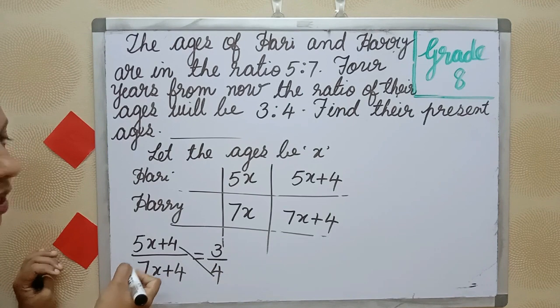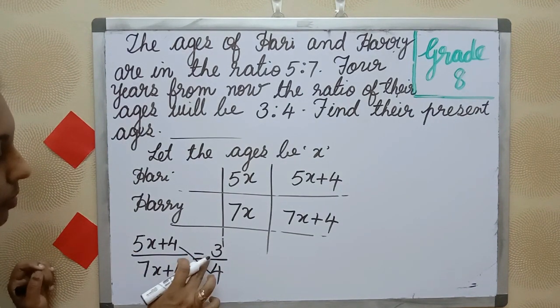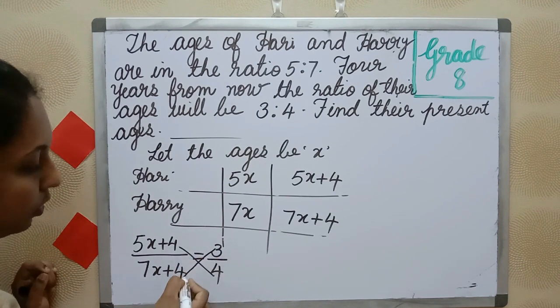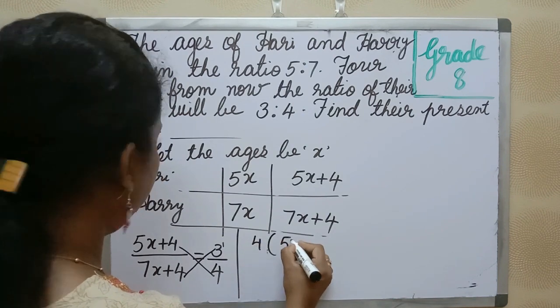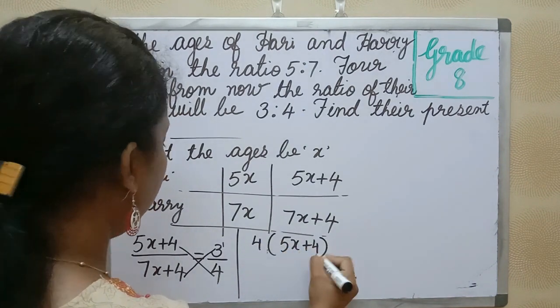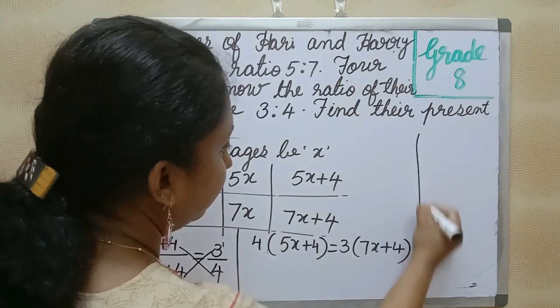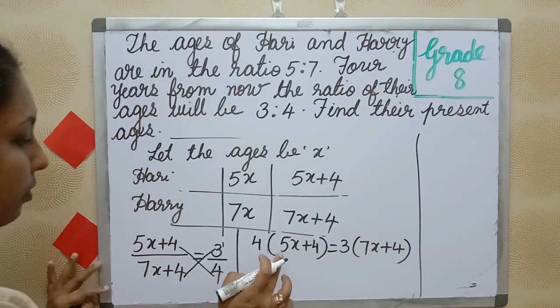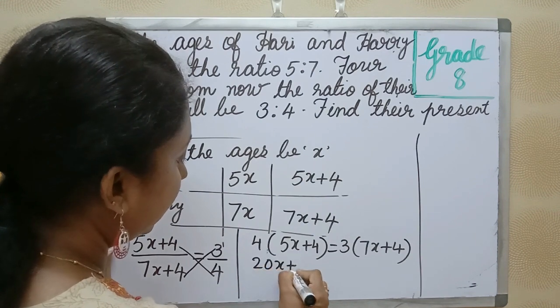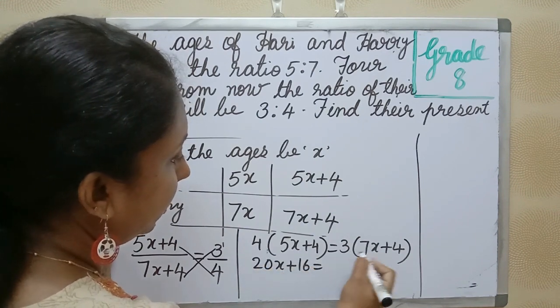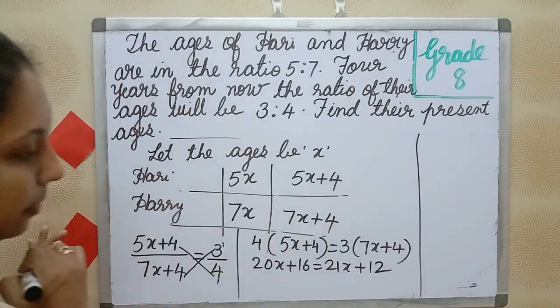Now put it in linear form, then simplify. Cross multiply first. 4 into 5x plus 4 is equal to 3 into 7x plus 4. Opening the brackets: 20x plus 16 is equal to 21x plus 12.